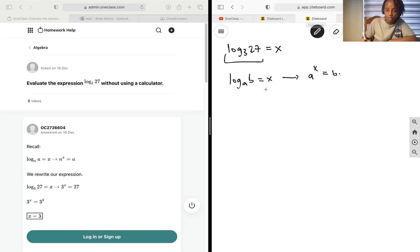So for log base 3 of 27 equals x, that will become 3 to the power of x equals 27. I know 3 squared equals 9, and times 3 that equals 27.